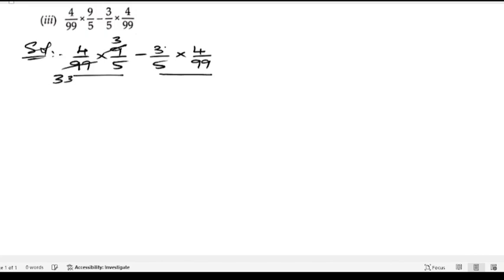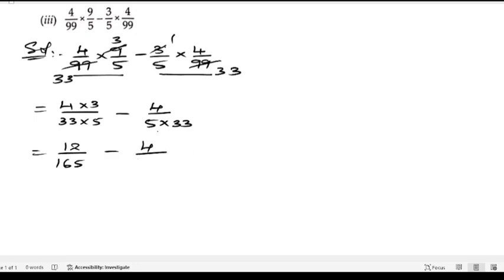Now we have: 4 × 3/5 × 33 = 12/165, minus 4/5 × 33 = 4/165. The LCM is 165, so 12 - 4 = 8. Therefore 8/165.